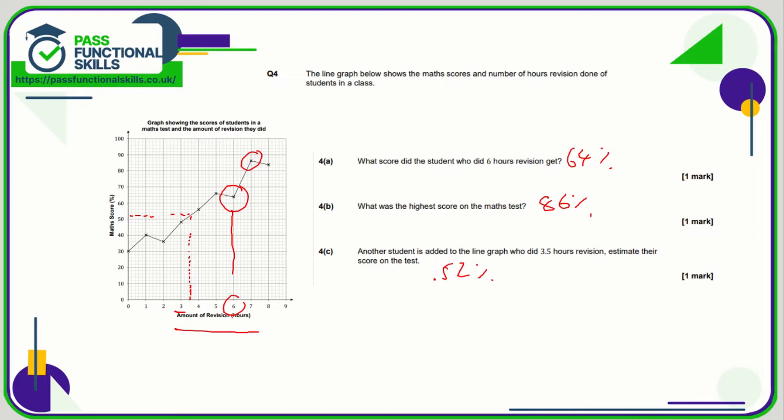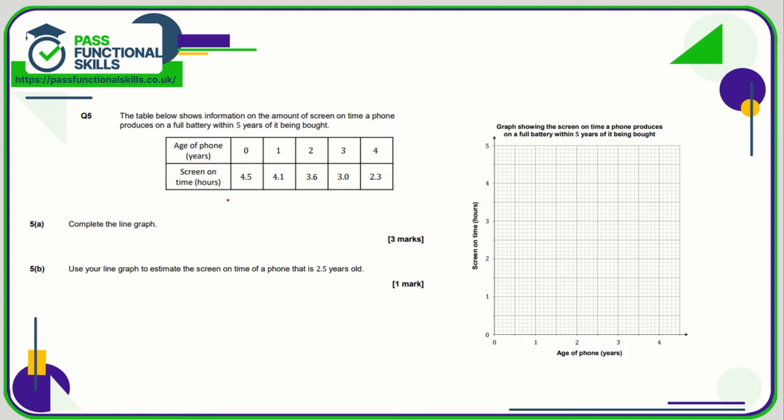Question number five, we need to complete the line graph. So age of phone in years is along the bottom, screen on time in hours is up the side. So our first point is zero, 4.5 - so across to 0, up to 4.5. 1, 4.1 - so across to 1, up to 4.1. 2, 3.6 - so across to 2, up to 3.6. 3, 3 - well that's nice and easy, across to 3 and up to 3. And 4, 2.3 - across to 4, up to 2.3. And then we just draw in a line just to connect these dots. Again use a ruler would be better, that doesn't look fantastic there.